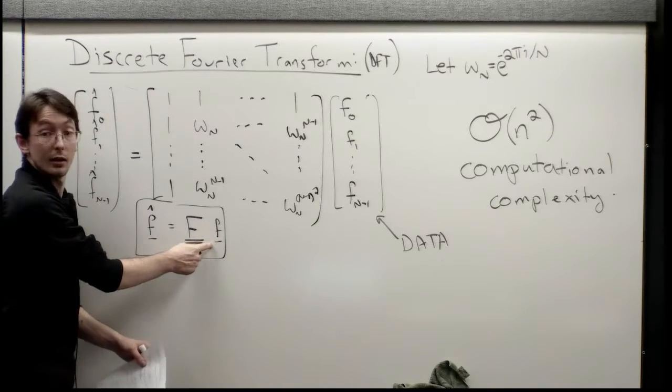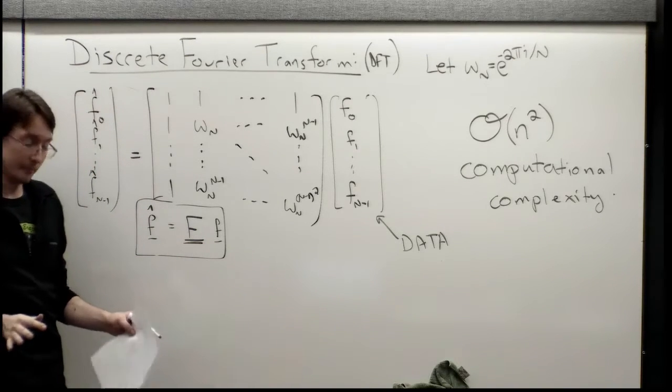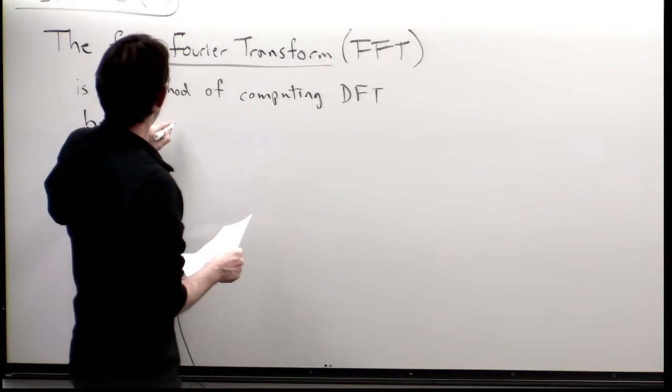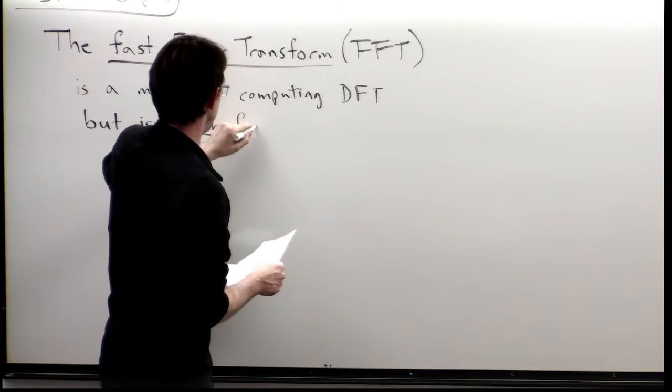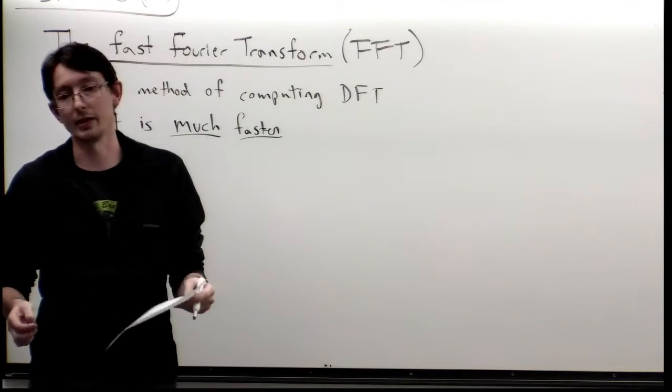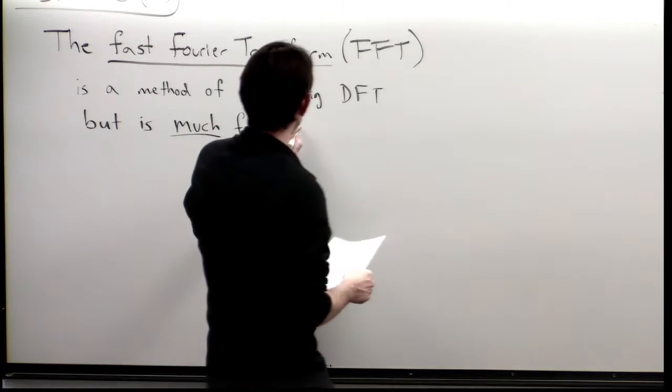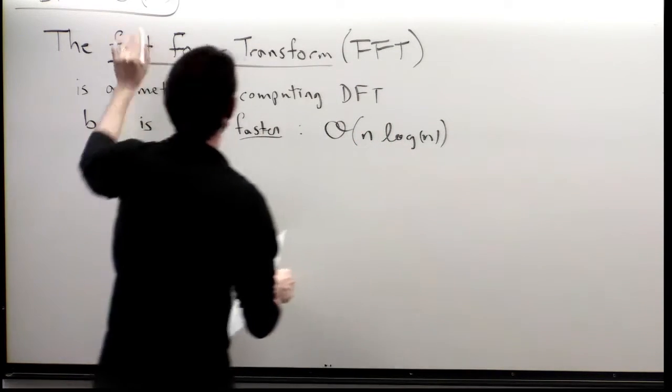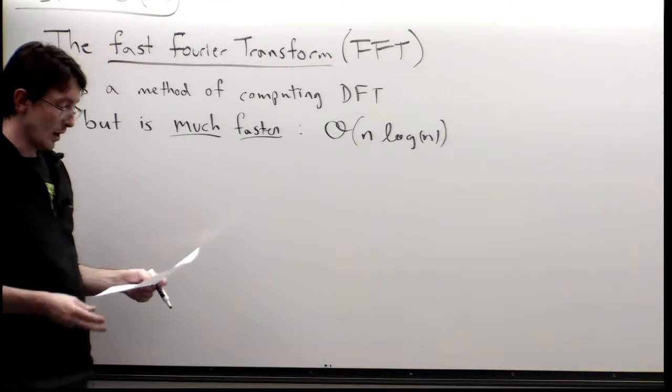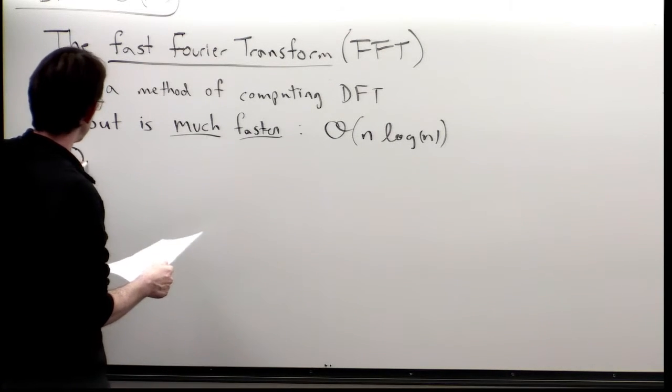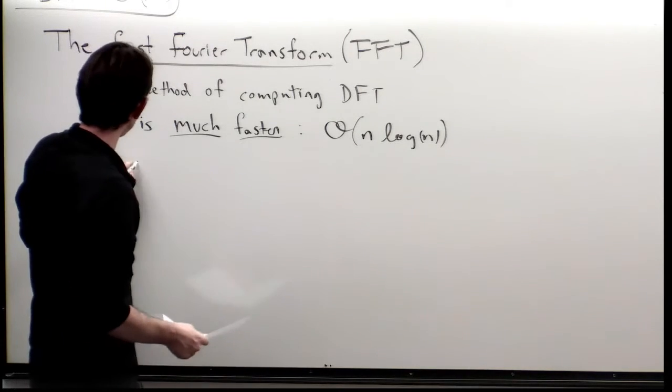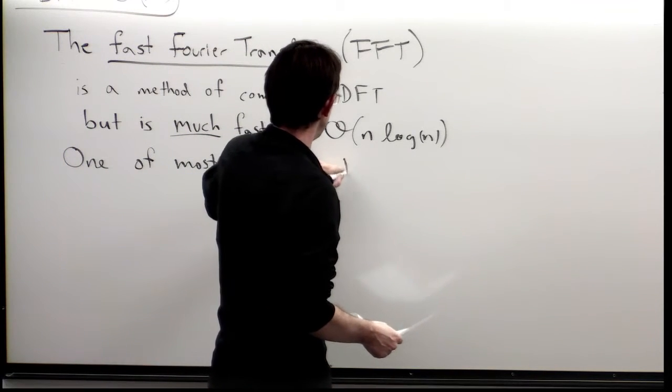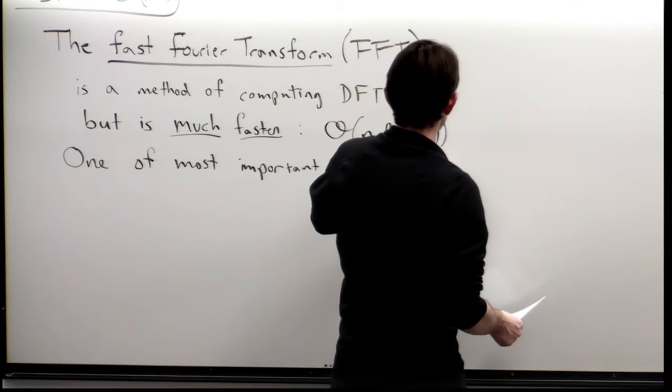So the FFT and the DFT compute the exact same thing. They compute this vector of frequencies from my data, and they give the exact same answer. But the FFT is much, much faster. This is a computational scientist's kind of ideal scenario. It's order n log n computational complexity, as opposed to order n squared. This is one of the most important algorithms that's ever been developed.